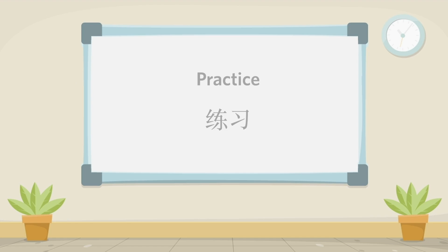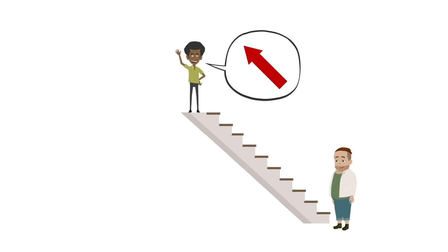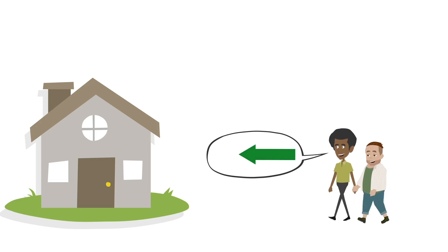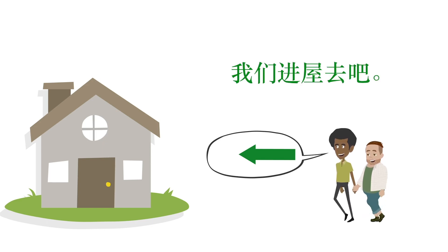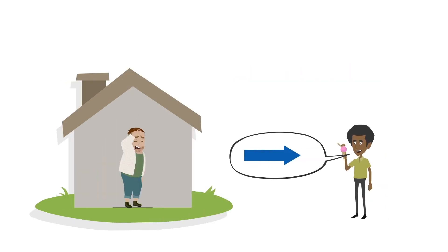Okay, now it's time for you to practice. You are the speaker — what will you say in the following scenarios? Scenario one: you want him to walk upstairs. 走上楼来. Scenario two: it's very cold outside, you ask your friend to go into the room. 我们进屋去吧. Scenario three: it's very hot in the room, so ask your friend to come out. 出来吧.